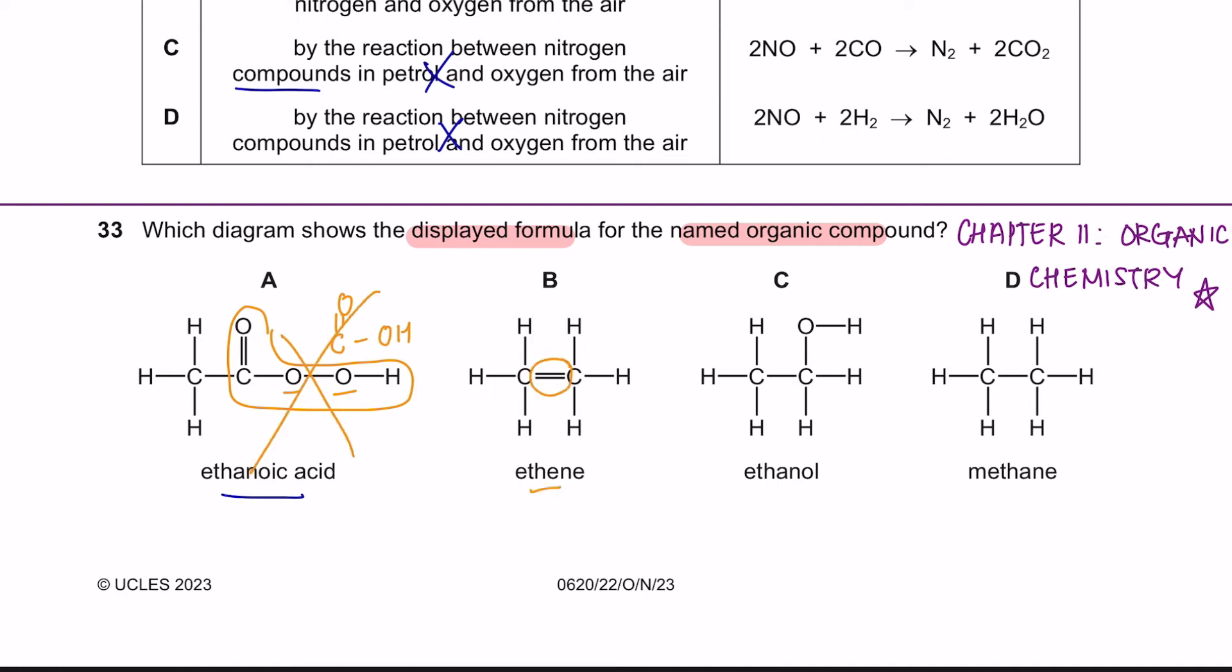Ethine is alkene that consists of double bond. One carbon atom can only have a maximum of 4 bonds. And we can see that over here it has 5 bonds. So this is also wrong.